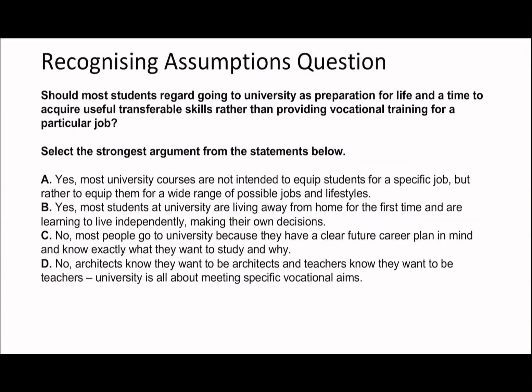Second question: should most students regard going to university as preparation for life — a time to acquire useful transferable skills rather than providing vocational training for a particular job? Option A says most university courses are not intended to equip students for a specific job, but rather to equip them for a wide range of possible jobs and lifestyles. Note this option is a bit lengthier, so it may take longer to process — you might want to do other questions first and come back. Option A talks about useful transferable skills, so it could be the answer.